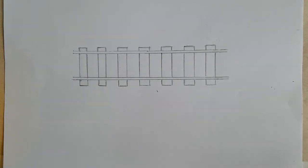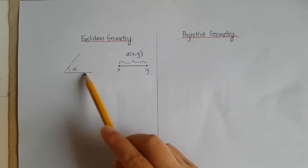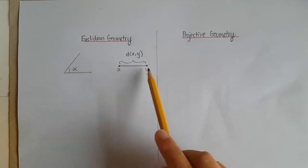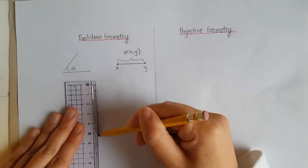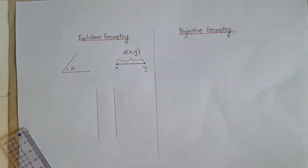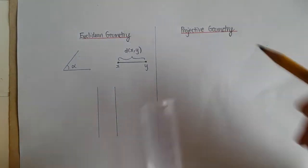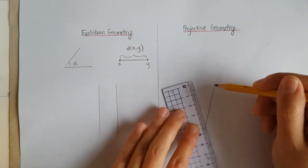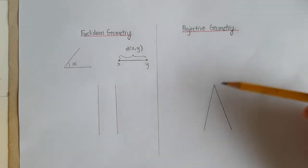This is a small analogy that shows one of the differences between Euclidean geometry and projective geometry. In addition to studying angles and distance, Euclidean geometry also takes into account that parallel lines will never intersect. Projective geometry is not concerned about parallelism because all pairs of lines will intersect, even at the point at infinity.